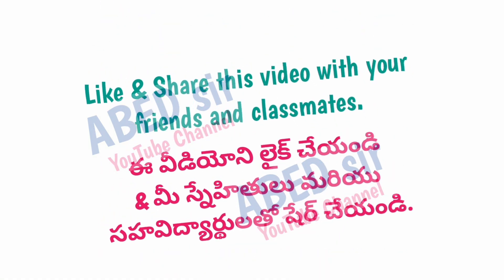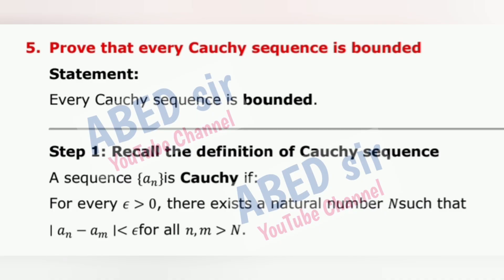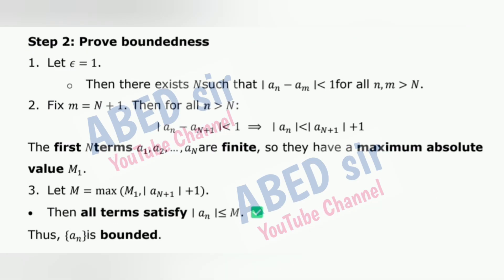Next important short question 5: Prove that every Cauchy sequence is bounded. Statement: Every Cauchy sequence is bounded. Step 1: Recall the definition of Cauchy sequence. A sequence {aₙ} is Cauchy if for every ε > 0, there exists a natural number N such that the Cauchy condition holds. Step 2: Prove boundedness. Let ε = 1. Then there exists N such that the condition holds. Fix m = N + 1. Then for all n > N, |aₙ| is controlled. The first N terms are finite, so they have a maximum absolute value M₁. Let M = max(M₁, bound). Then all terms satisfy |aₙ| ≤ M. Thus {aₙ} is bounded.